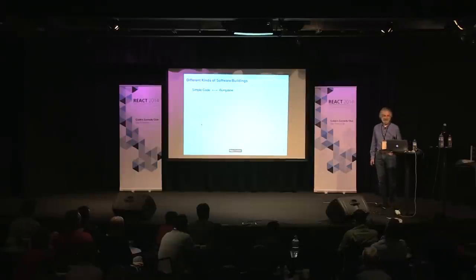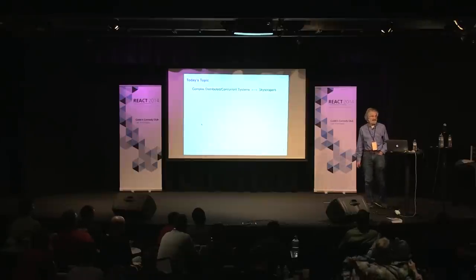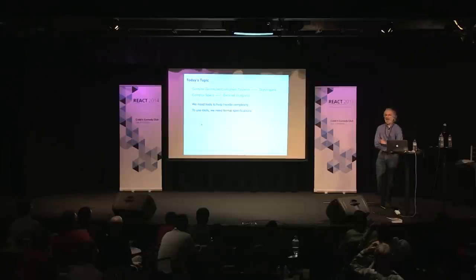There are different kinds of software and different kinds of buildings. There's some very simple code that is analogous to a bungalow. For that kind of code, you write short informal specs, analogous to simple blueprints or maybe just design sketches an architect might make. That's a topic for another talk. Today I'm going to be talking about skyscrapers, or their software analog: complex distributed concurrent systems — not just software, but hardware analogs as well. Those require complex specs, just like skyscrapers require detailed blueprints. We need tools to handle that kind of complexity, and to build tools to help us with our specifications, they need to be formal — written in some precisely defined language.